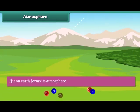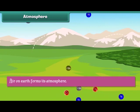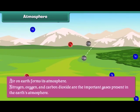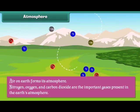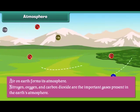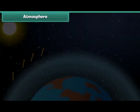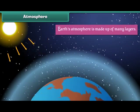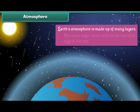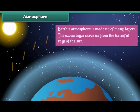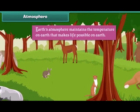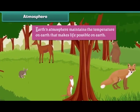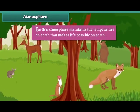Air on Earth forms its atmosphere. Nitrogen, oxygen and carbon dioxide are the important gases present in the Earth's atmosphere. Earth's atmosphere is made up of many layers. The ozone layer saves us from the harmful rays of the Sun, and Earth's atmosphere maintains the temperature on Earth that makes life possible.